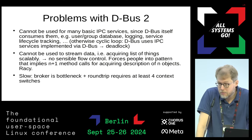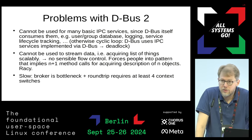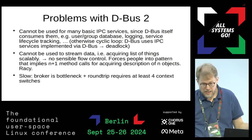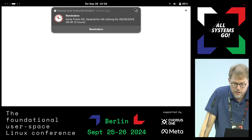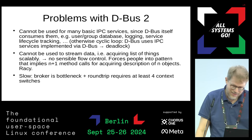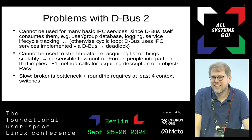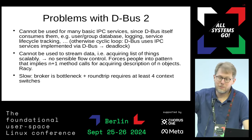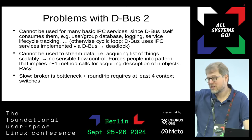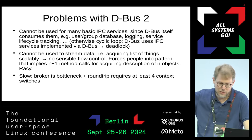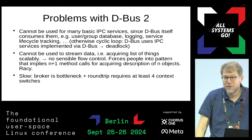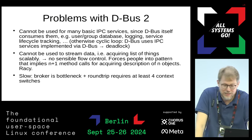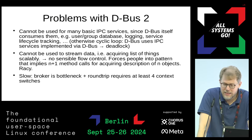Another major issue is DBus cannot be used for many basic IPC servers that DBus daemon or DBus broker themselves want to talk to. For example, user resolution services - we have userdbd on systemd. When DBus initializes, it wants to resolve all users listed in the policy, and for that it does glibc NSS, which again needs to do IPC. Initially we implemented that via DBus, and then we realized: DBus uses NSS, which uses DBus, and there you have your deadlock.